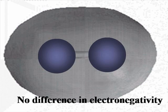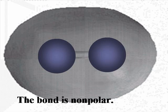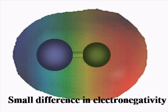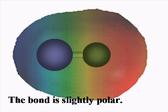When these two atoms are the same, there's no difference in electronegativity between them. The electrons are being shared equally, and the bond that forms is non-polar. In this next molecule, the atoms are not the same — there's a small difference in electronegativity. The electrons are pulled more towards the smaller atom, creating a slightly polar bond.